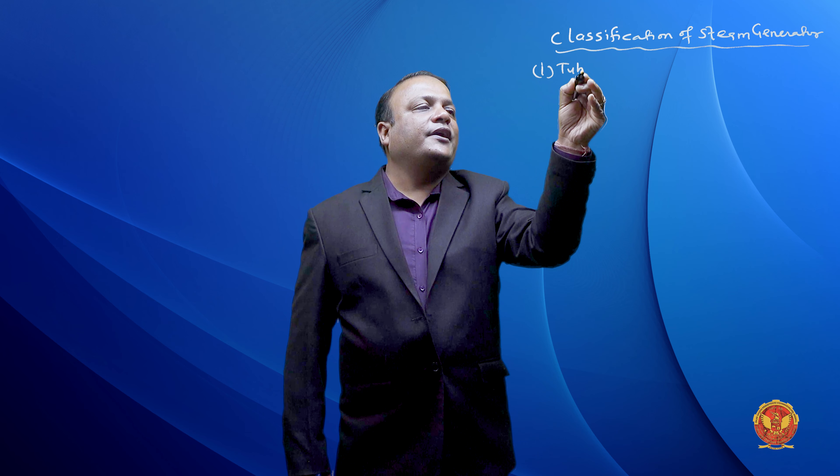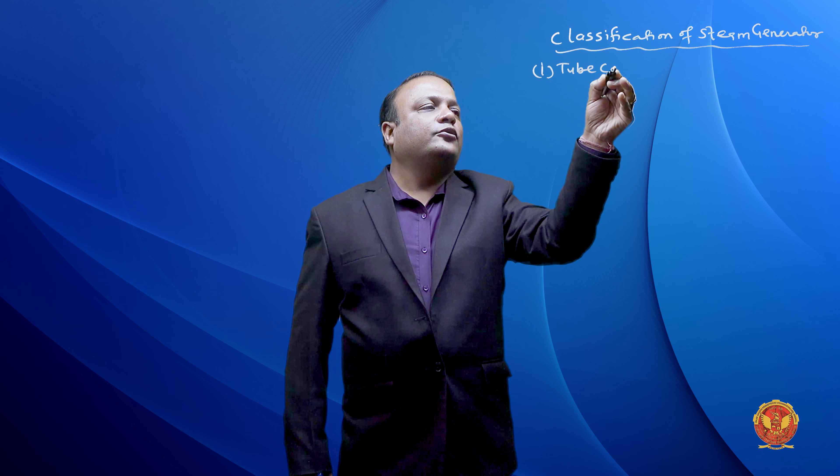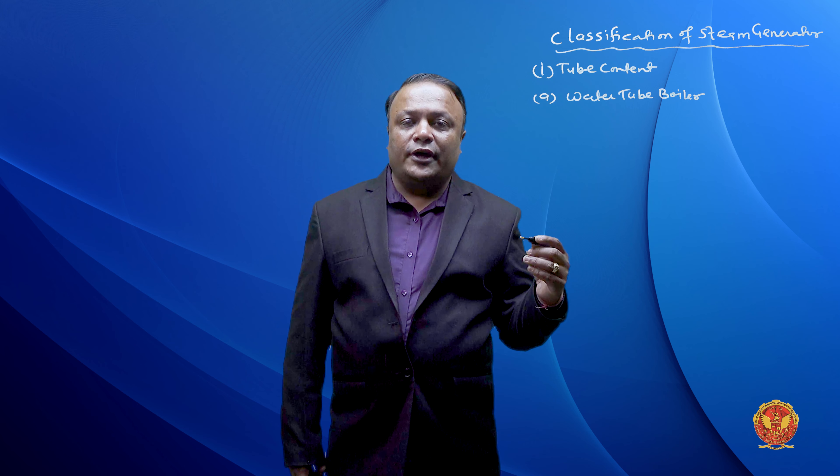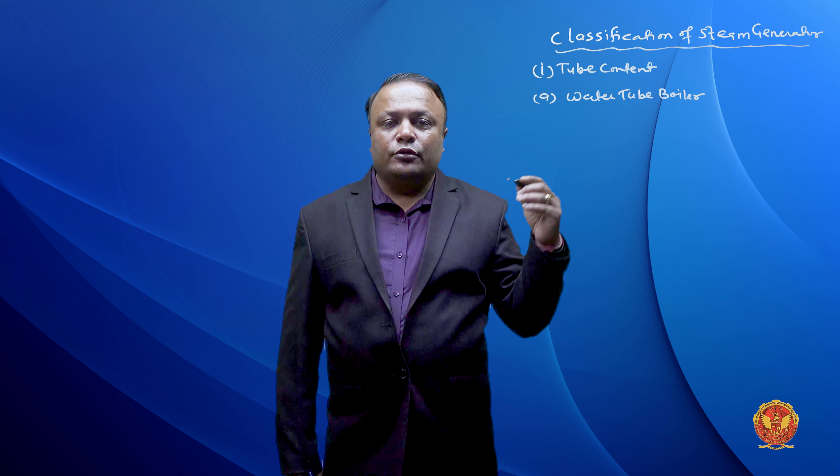We can classify steam generators based on the following: first, the number of tubes; second, the axis of shell; third, the method of firing; fourth, the method of water circulation; fifth, the nature of service; sixth, the nature of draught; seventh, the number of tubes; and eighth, the pressure of steam.